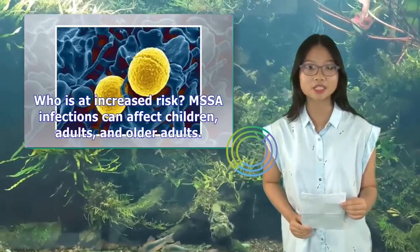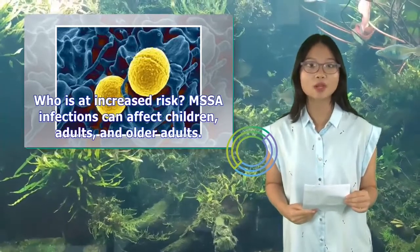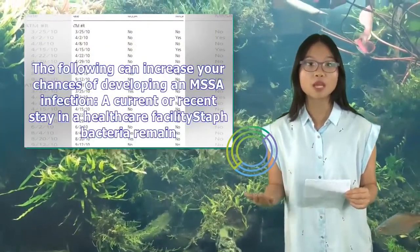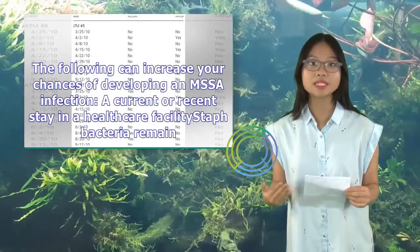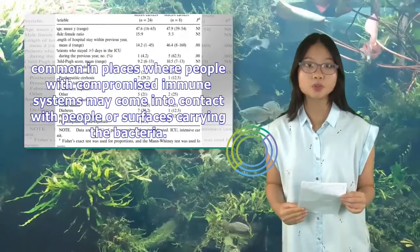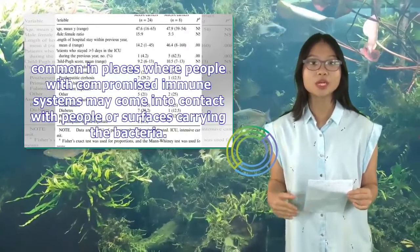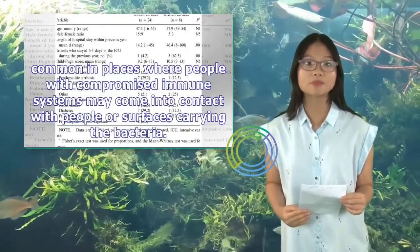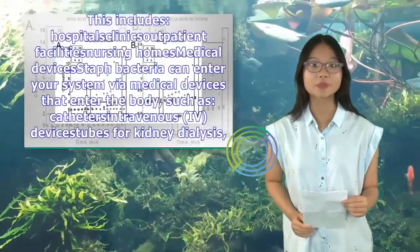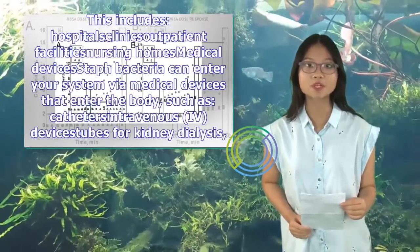Who is at increased risk? MSSA infections can affect children, adults, and older adults. The following can increase your chances of developing an MSSA infection. A current or recent stay in a health care facility — staph bacteria remain common in places where people with compromised immune systems may come into contact with people or surfaces carrying the bacteria. This includes hospitals, clinics, outpatient facilities, and nursing homes.